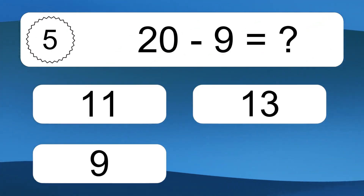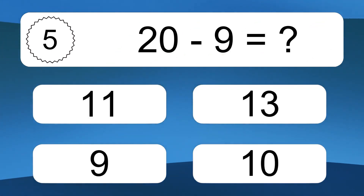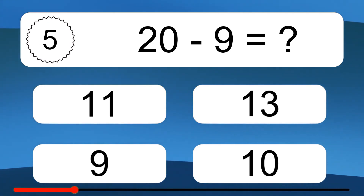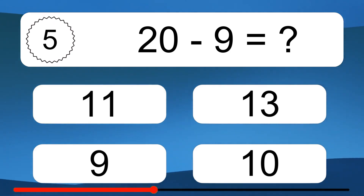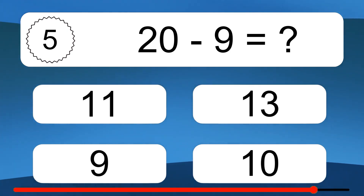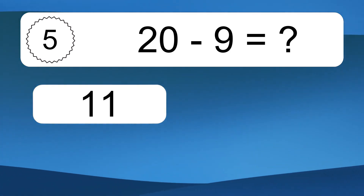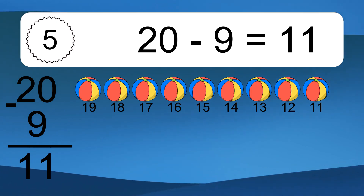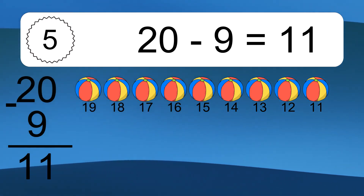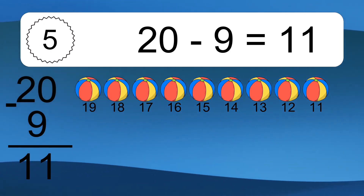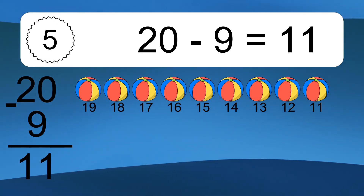20 minus 9 equals what? Let's count it: 19, 18, 17, 16, 15, 14, 13, 12, 11.